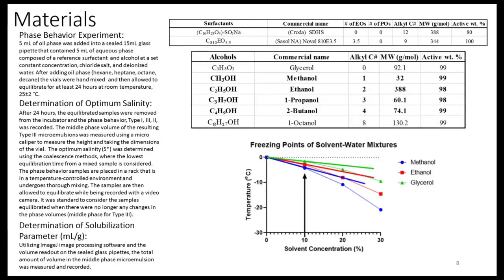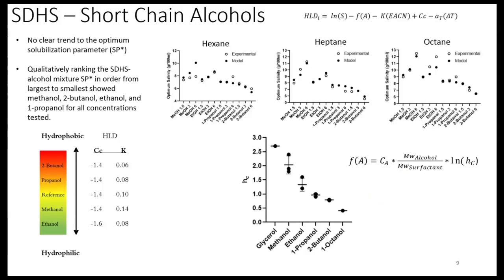For the sake of time, I'll quickly go over the materials. Since I provided a handout, you can stop and look at the procedures on the left. The two reference surfactants utilized in this study were sodium dihexyl sulfosuccinate, which is AMA, a common anionic reference surfactant. We also found a non-ionic reference surfactant from the Novelle series — 810E3.5, an alcohol ethoxylate — which could also form a type 3 microemulsion at room temperature. The alcohols specifically discussed in this study are bolded in the table.